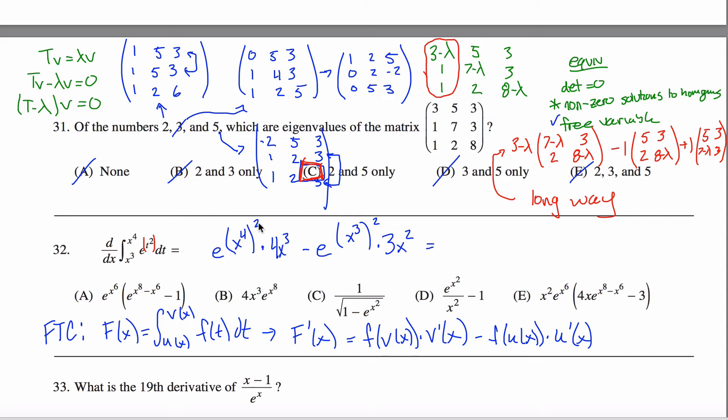X to the 4th power squared is X to the 4th times X to the 4th, which is X to the 8th. So I have E raised up to some power, that power is X to the 8th. Note the unnecessary parentheses, and I'll multiply that by 4X cubed, and from that I want to subtract E raised up to the X to the 6th power again with the unnecessary parentheses times 3X squared.